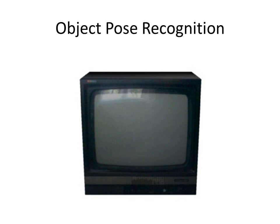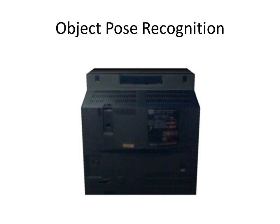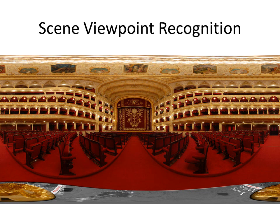This is related to the pose recognition problem in object recognition. Only some parts of a 3D object, such as a television, can be seen from a single camera view, and the same object looks very different from different viewpoints. Pose recognition is important for interacting with objects. For example, you cannot watch a TV from this viewpoint. Although pose recognition has been studied in objects, this is a new problem in scenes.